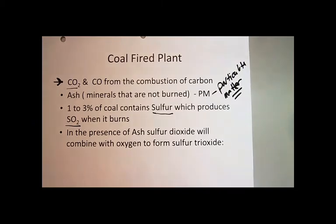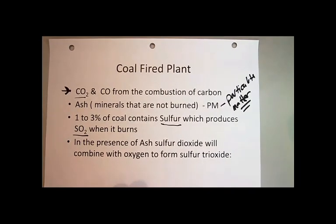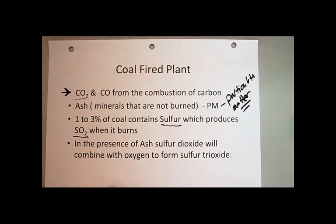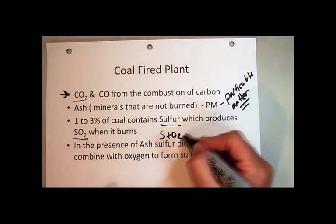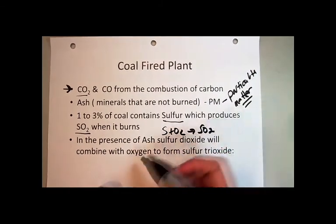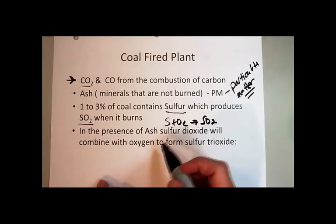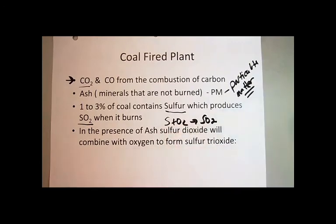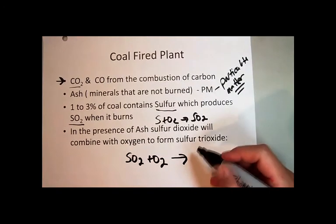Similar to the NOx situation in combustion engines — where nitrogen present leads to NO and then NO₂ as a secondary pollutant — a similar process happens with sulfur. Sulfur dioxide (SO₂) is the primary combustion product, but in the presence of ash, sulfur dioxide combines with oxygen to form sulfur trioxide (SO₃). Balancing this: 2 SO₂ + O₂ → 2 SO₃, with ash acting as a catalyst.